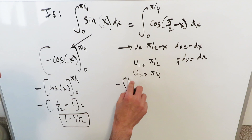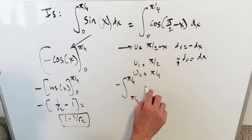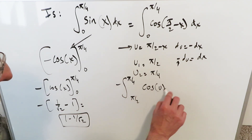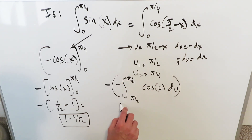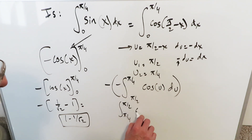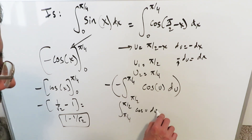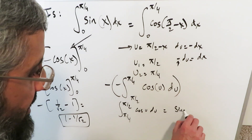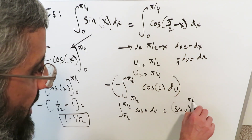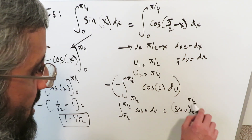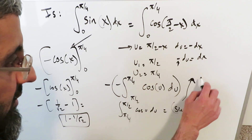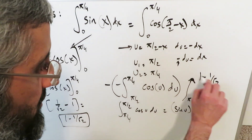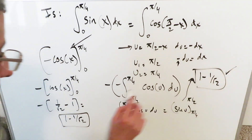You have the integral of cosine(u) du from π/2 to π/4. Applying the minus and flipping the limits, you get the integral of cosine(u) du from π/4 to π/2. The antiderivative is sine(u), evaluated from π/4 to π/2. The result is sine(π/2) − sine(π/4) = 1 − 1/√2.